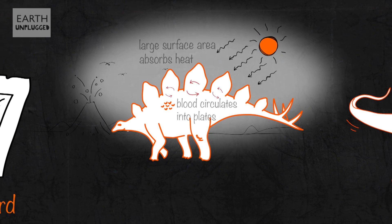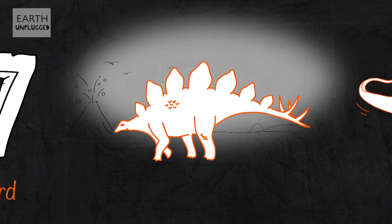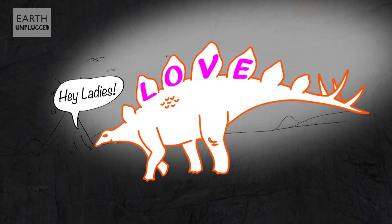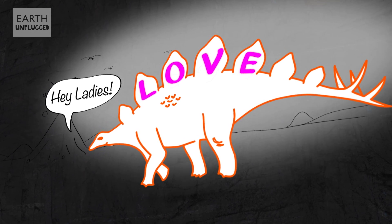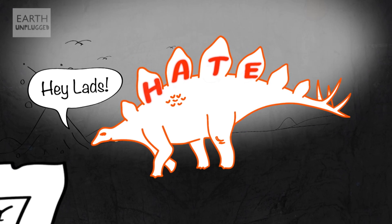Further groups of paleontologists believe the plates were used as signals to other Stegosauruses. Perhaps the males used them to attract the ladies, impressing them with their size and color, or they were signaling to other Stegosauruses nearby just how strong and powerful they were, much like how deer use their antlers today.